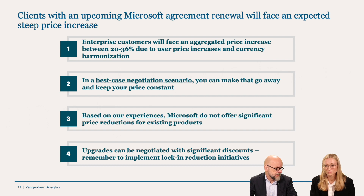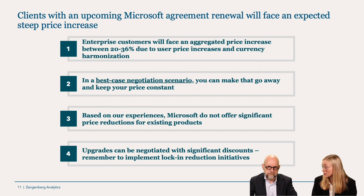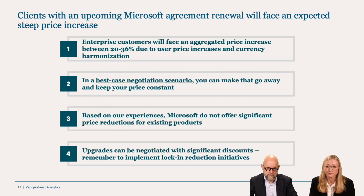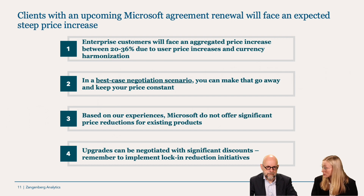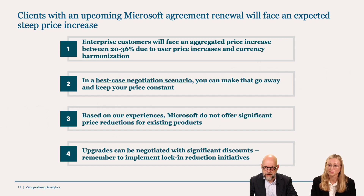The best-case scenario is keeping prices more or less constant. Microsoft does not offer significant price reductions for existing products, but we have seen increasing price reductions for user licenses where price increases have been present. Upgrades can be negotiated with significant discounts — for example, we had a client who chose a mix scenario: E3 as the base license, upgrading some users to E5, where we saw very significant discounts on both licenses because the client accepted increased lock-in by implementing E5.